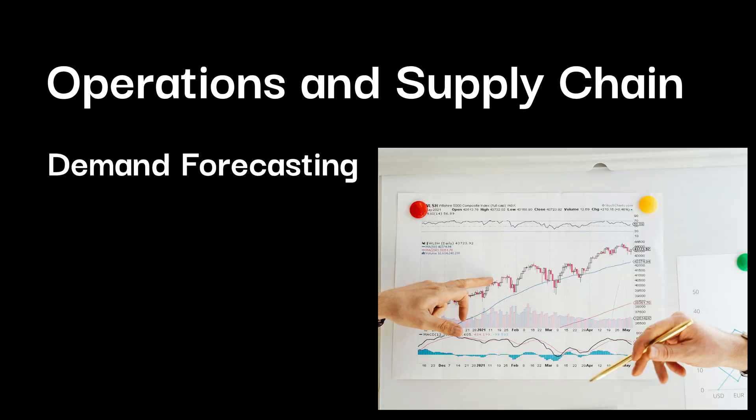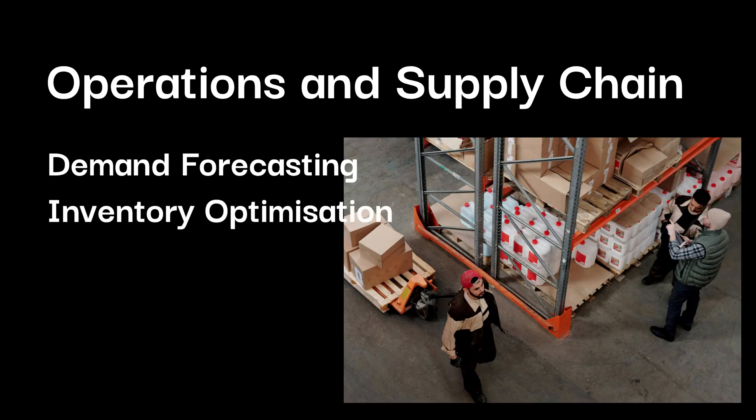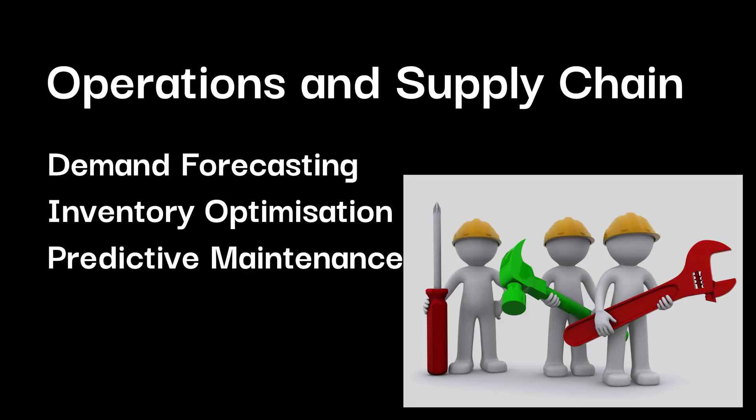Next, we have operations and supply chain, where efficiency and cost reduction are paramount. Demand forecasting — predicting future demand for products — helps companies optimize production and logistics. Inventory optimization involves minimizing costs and avoiding stockouts by maintaining optimal inventory levels. And predictive maintenance means predicting when equipment is likely to fail, allowing for proactive maintenance and preventing costly downtime.